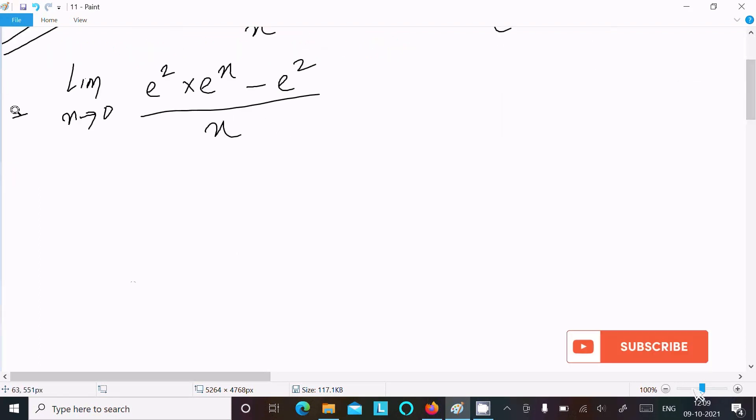After that, you can see e^2 is common. Taking that out: limit as x tends to 0, e^2 is the common factor. Now you can get e^x minus 1 divided by x. We can write e^2 as the constant outside the limit.